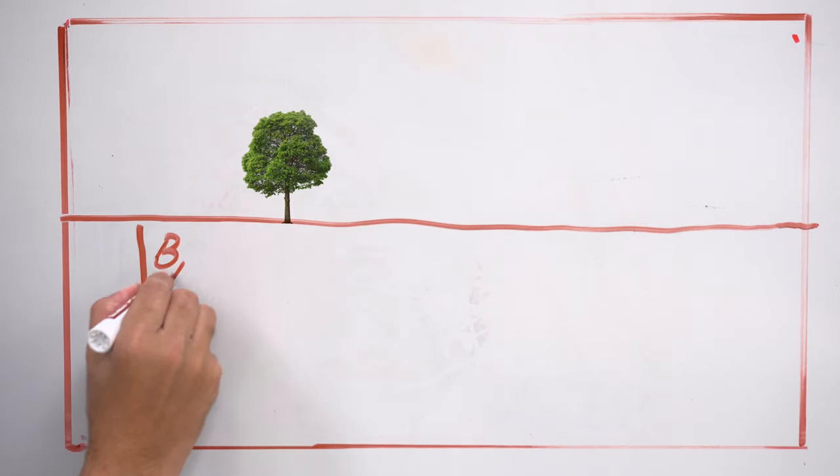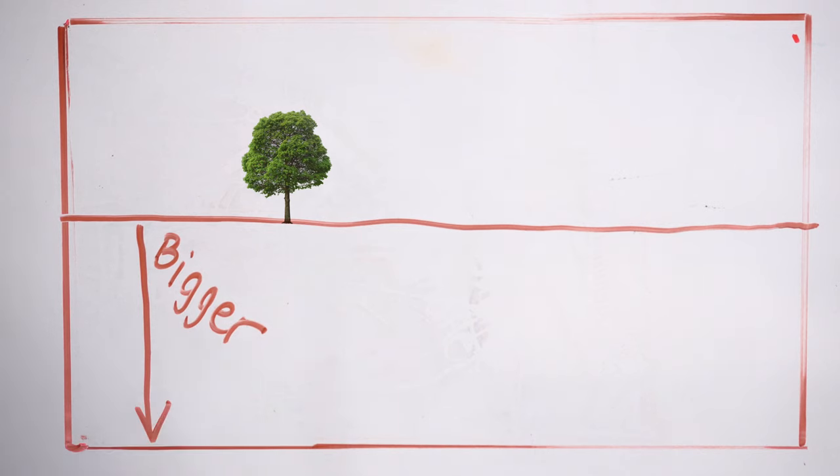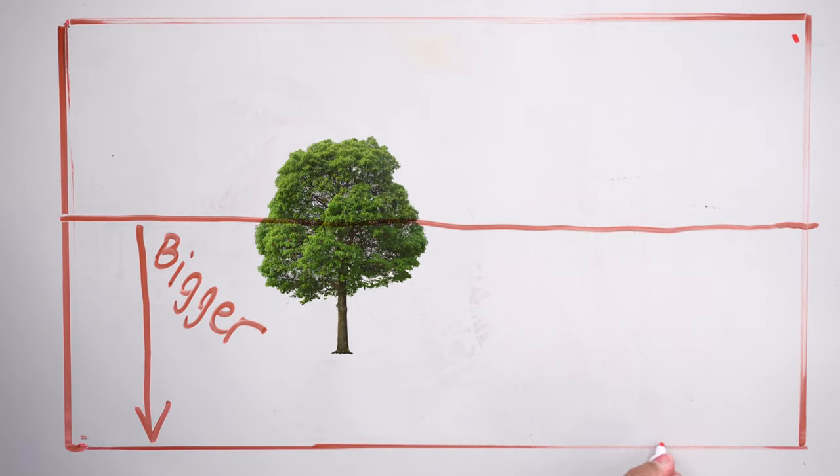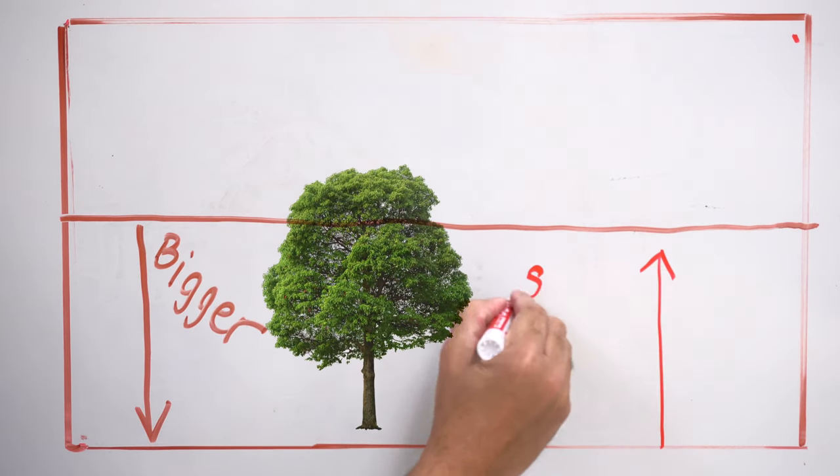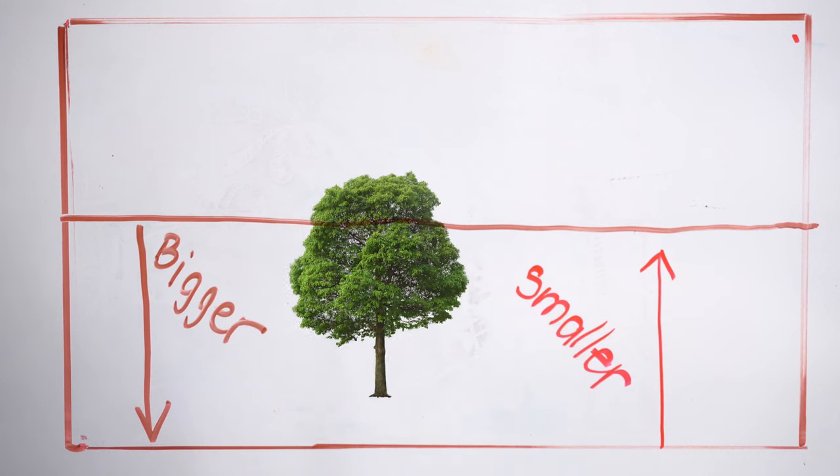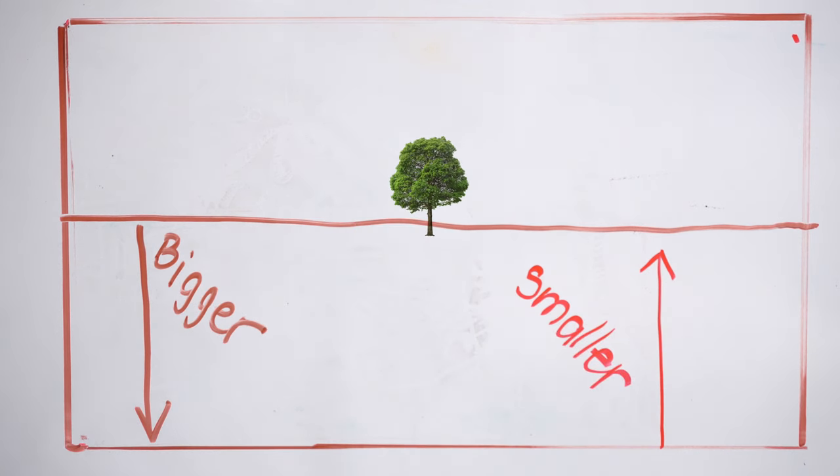As objects move down on the picture plane or away from the horizon line they get bigger and bigger, and as they move up on the picture plane or closer to the horizon line they get smaller and smaller.